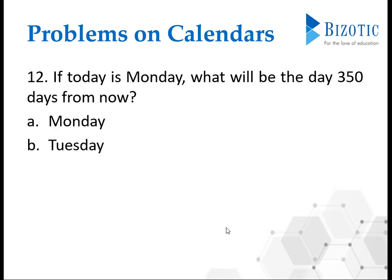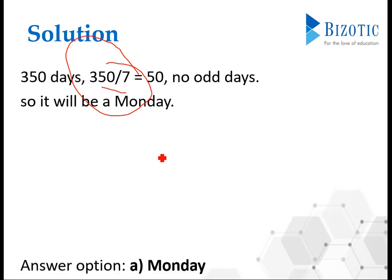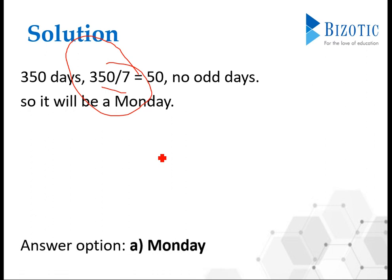The solution is simple. Take 350 days divided by 7, and it will exactly go in 50 weeks. No odd days means there is no change in the day, so it will be Monday again. Your answer is option A, Monday.